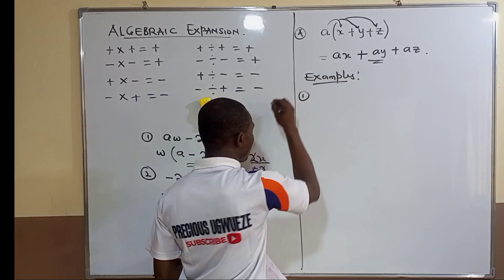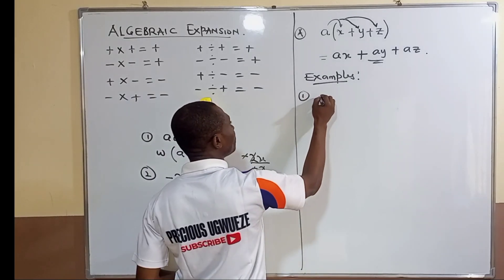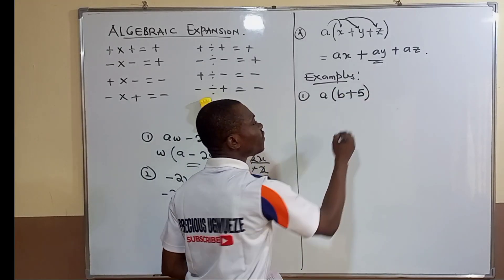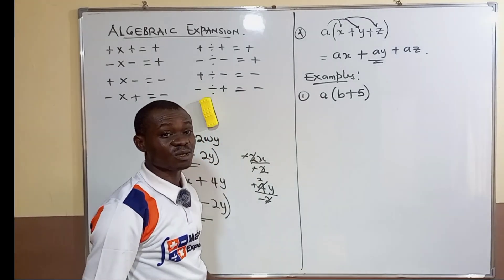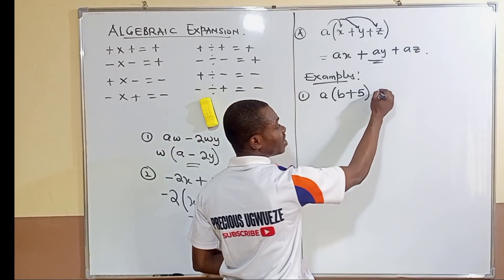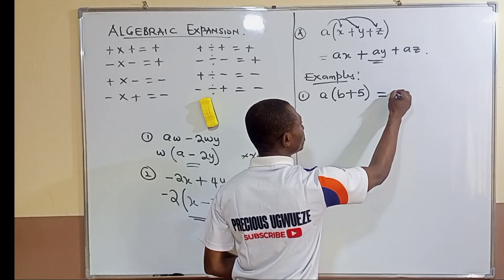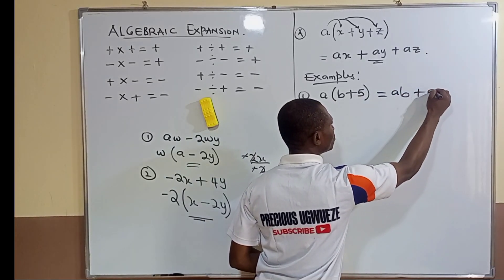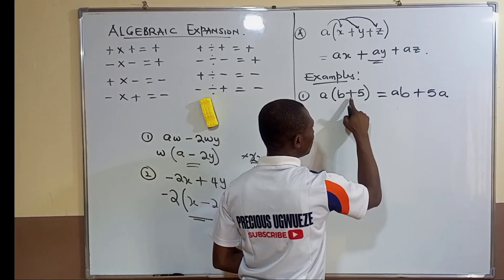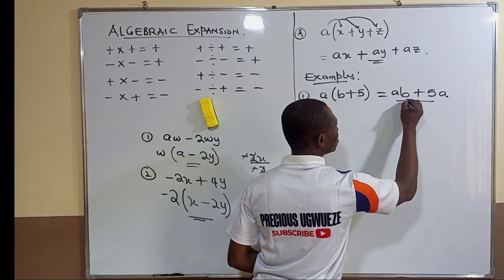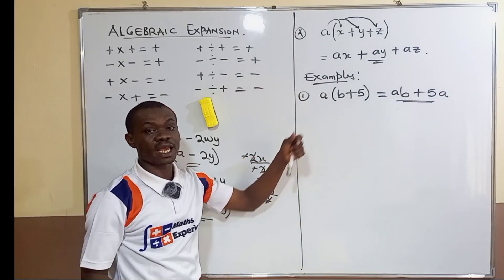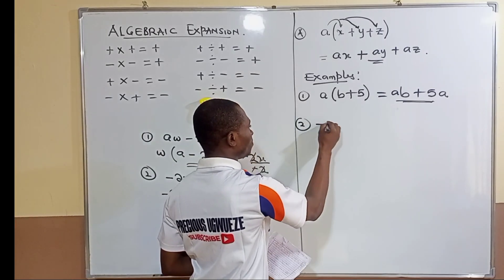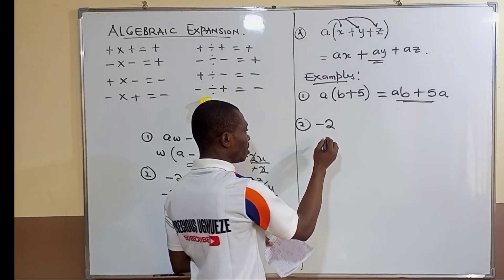Example one: a(b + 5). This is straightforward — a multiplies b to give ab, and a multiplies five to give 5a. You bring down the plus sign because your a is positive. So the answer is ab + 5a.